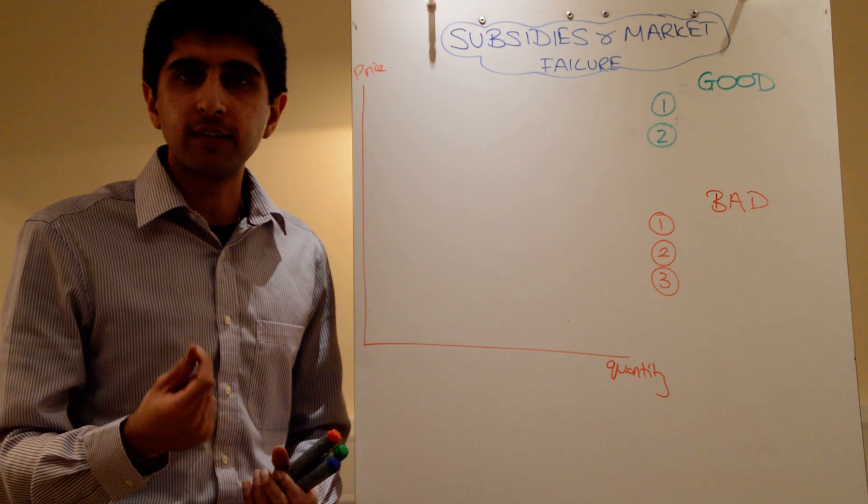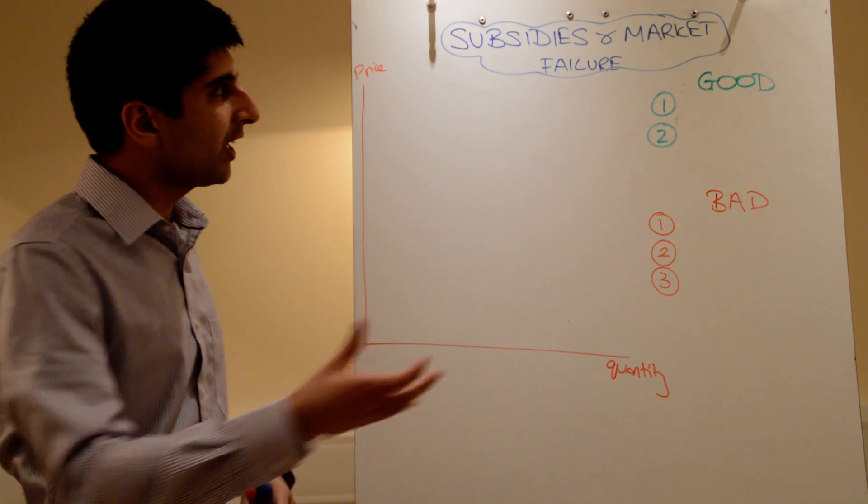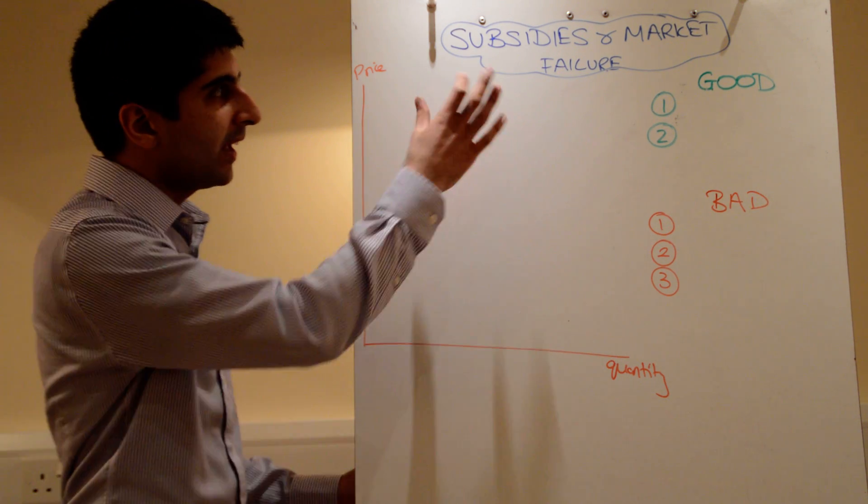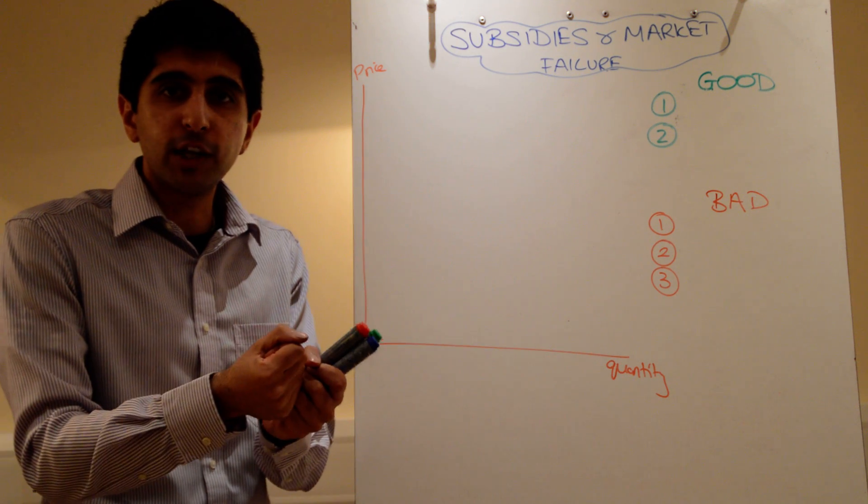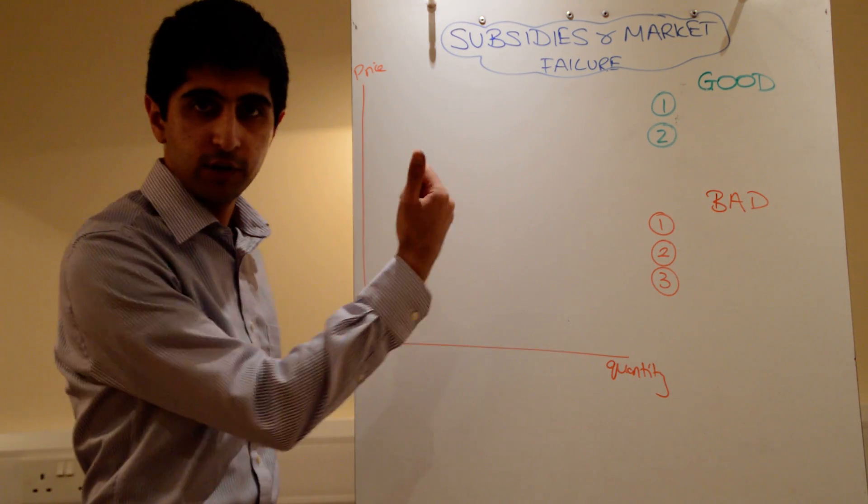Subsidies very simply are just money grants given to firms. The intention is to lower the cost of production. Really, if you think about it, they are just the opposite of taxes, and the intentions are very much the opposite too. So, by giving out money grants to firms, that will lower the cost of production and hopefully increase output and reduce price.